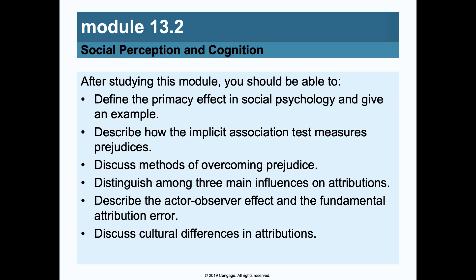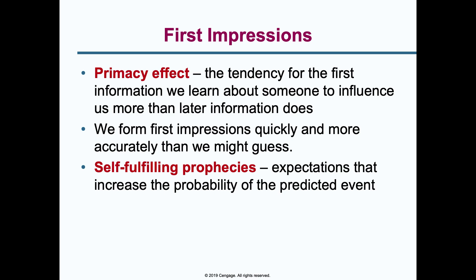The second section of this chapter covers social perception and cognition — learning about others and making inferences from that information. This influences our observations of people, our memory, and how we think about things. The information we get through observations of people leads to first impressions. The primacy effect refers to the tendency for the first information we learn about someone to influence us more than anything we learn later. We form first impressions very quickly, and they're actually more accurate than we might guess.